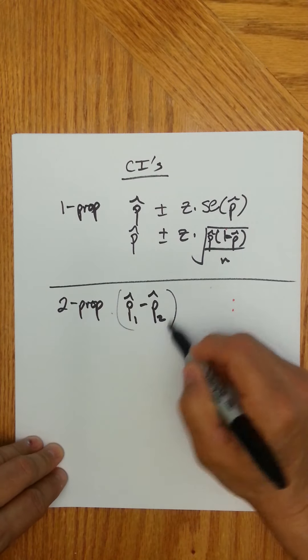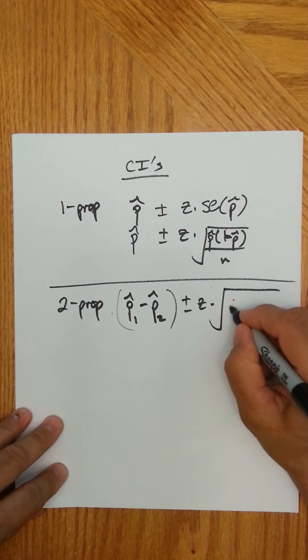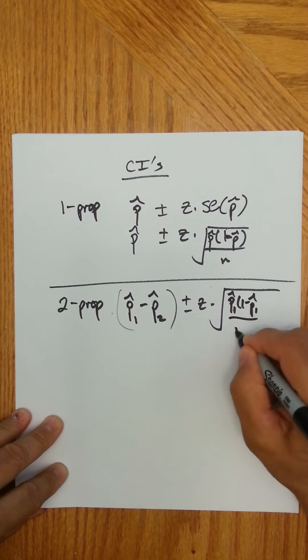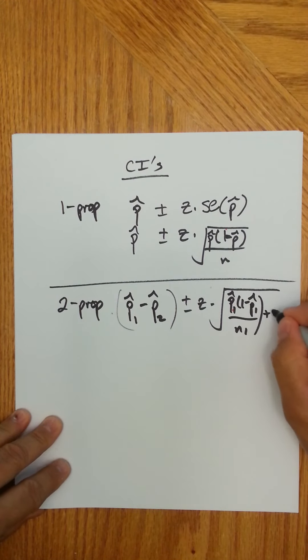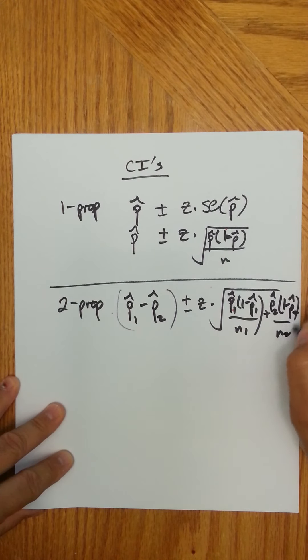And so once you subtract the two, then you add or subtract z times, and here you have p hat 1, 1 minus p hat 1 over n1, plus p hat 2, 1 minus p hat 2 over n2.